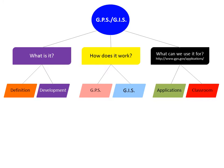Under 'How does it work?' I chose pink for GPS and blue for GIS. The reason I chose those colors is because I want to outline what each of them are individually, and I thought of it as kind of like a battle of the sexes — pink versus blue kind of thing.